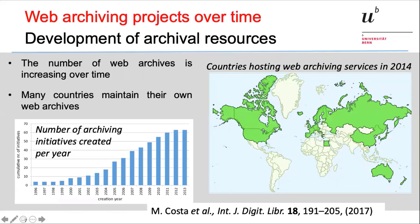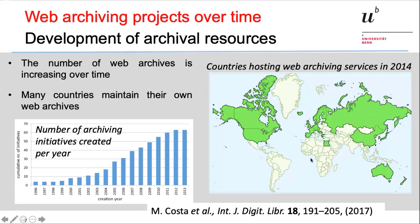How many web archiving services do we currently have? You can see here the development of accumulated web archiving initiatives, from a 2017 survey. By around 2014, there were about 60 web archiving services, covering all the countries shown in the map. This doesn't mean they cover all web pages of those countries — it just means countries with some web archiving services. Some services also fetch pages from all over the world, and since 2014 there have probably been more services added.